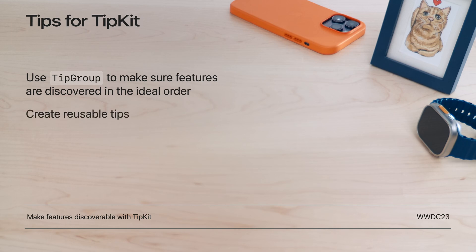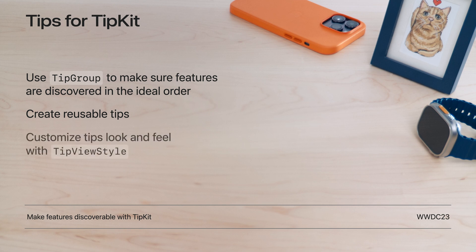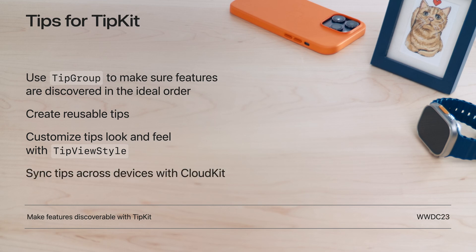Custom identifiers provide an easy way to make reusable tip models so tips can be re-displayed based on their content. TipViewStyle can be used to create custom layouts and interactions for your tips so they always match your app's UI. And CloudKit can be used to sync TipKit's data store across devices so your tips don't get re-displayed unnecessarily. On behalf of the entire TipKit team, thank you so much for joining me today and we can't wait to see how TipKit can help people discover your app's great new features.